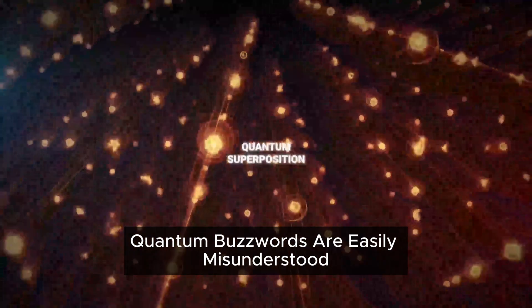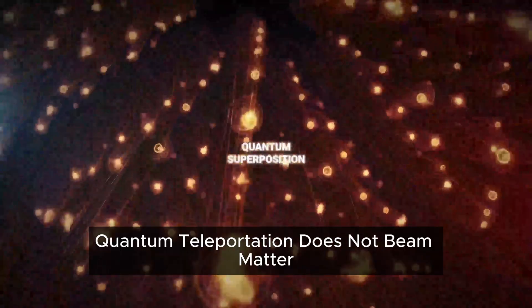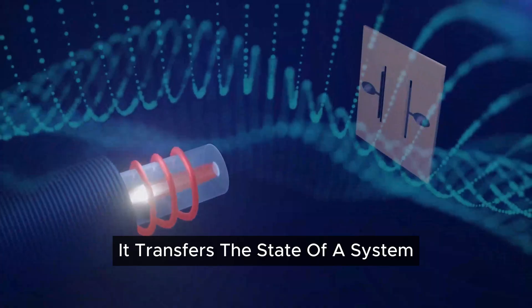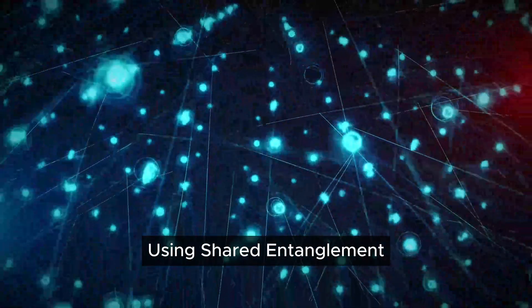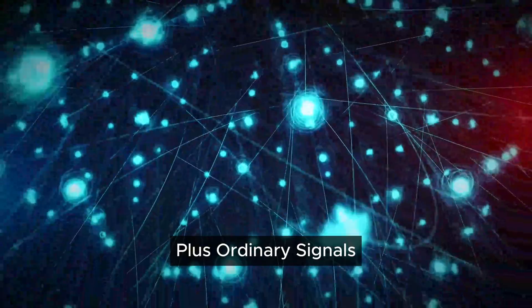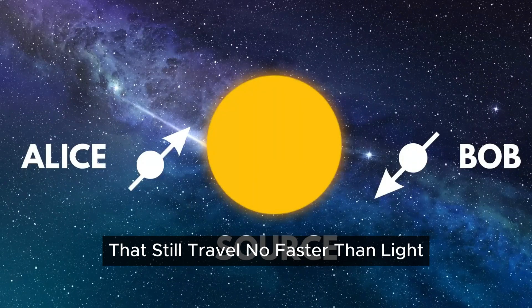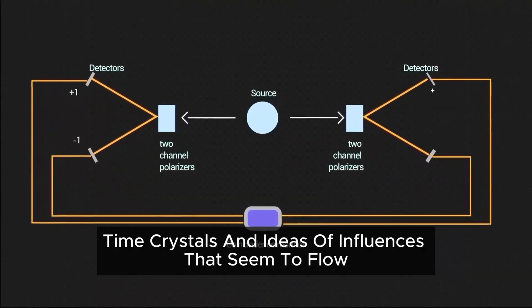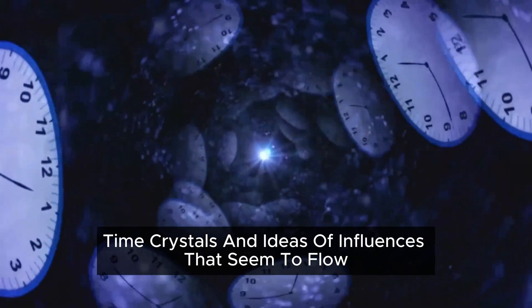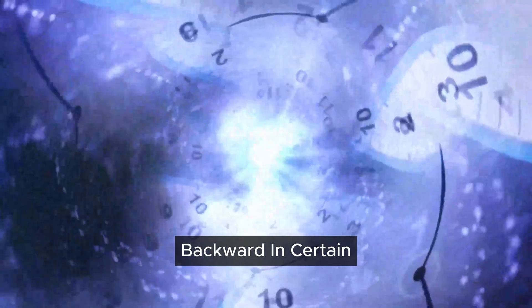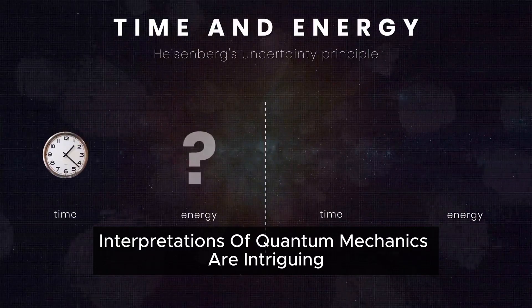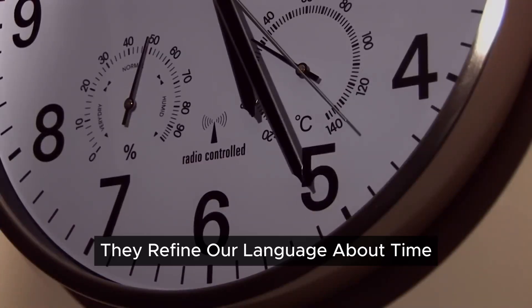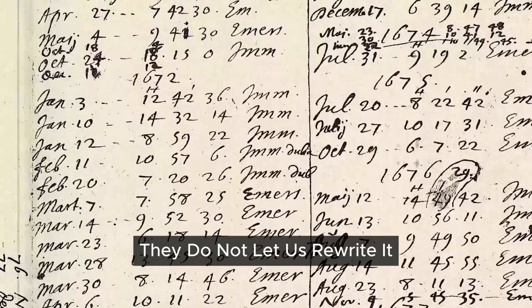Quantum buzzwords are easily misunderstood. Quantum teleportation does not beam matter or messages instantaneously. It transfers the state of a system using shared entanglement plus ordinary signals that still travel no faster than light, so the no-signaling principle remains intact. Time crystals and ideas of influences that seem to flow backward in certain interpretations of quantum mechanics are intriguing, but they do not assemble a practical time machine. They refine our language about time. They do not let us rewrite it.